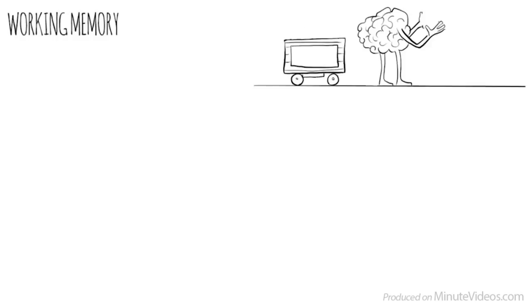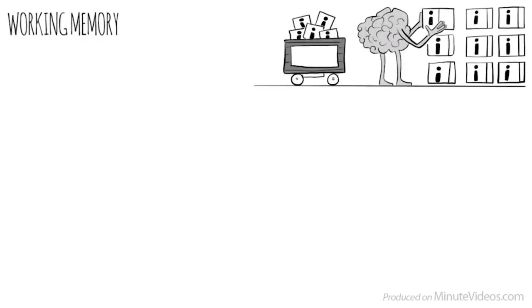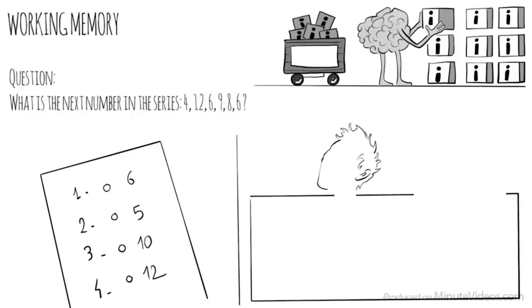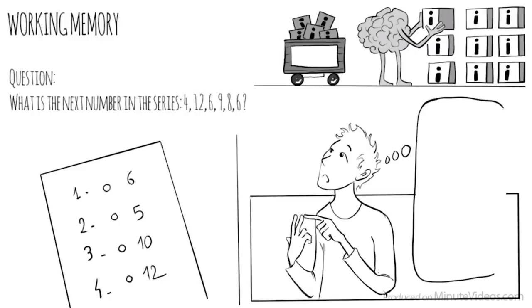The second section was about working memory, our ability to keep several chunks of information in our mind simultaneously. One of the questions was, What is the next number in the series? 4, 12, 6, 9, 8, 6. There were four options: 6, 5, 10, or 12. The trick here was to put all the digits in my head and look for a pattern. 4, X, 6, X, 8, X. Which means the next would be 10.